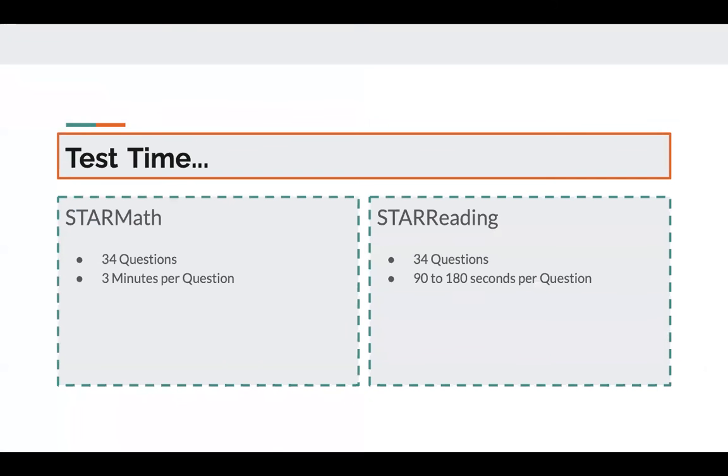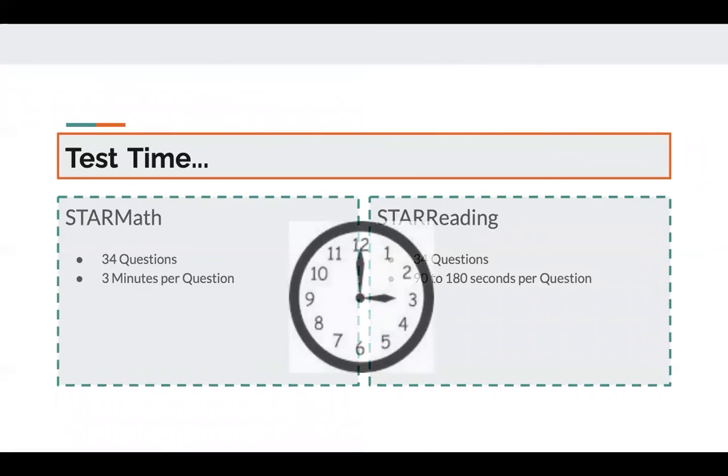So let's talk a little bit about the assessments themselves. Both the STAR Math and STAR Reading Assessment will contain 34 questions for students to answer. While the test is not timed, the questions are required. Students have three minutes to answer math questions, and anywhere between a minute and a half to three minutes to answer reading questions. A clock will appear at the top of the screen warning students when there are only 15 seconds left to answer a question.